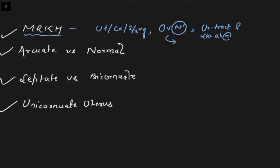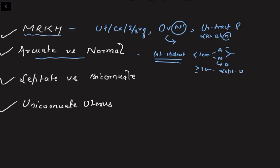ASRM 2016 and 2021 categorize arcuate and normal as equivalent, but they can be distinguished: if there is no internal indentation, it is normal; if there is internal indentation less than one centimeter, it is arcuate uterus; if it is greater than or equal to one centimeter, it is septate uterus.